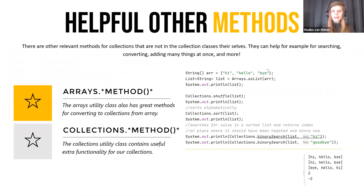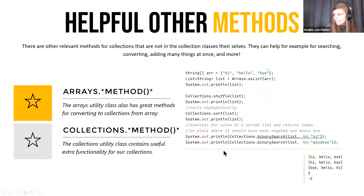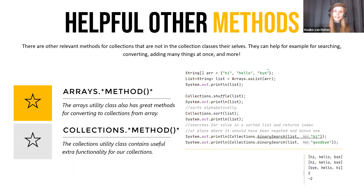I want to mention some helpful utility methods. We've seen four interfaces - list, set, map, and queue - and there are external helper classes that are very useful: Arrays and Collections. Arrays has an as list method that converts an array into a list. Collections has a shuffle method that randomizes the order of a collection. There's also a binary search method and many more useful methods on these classes.